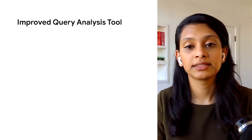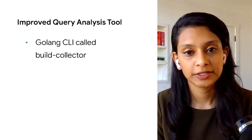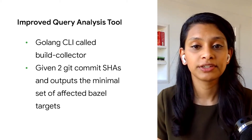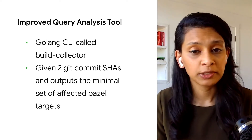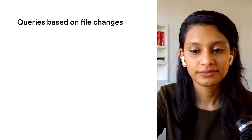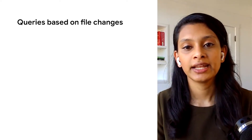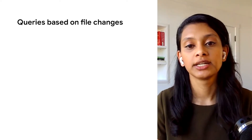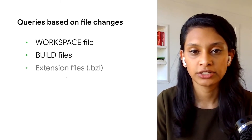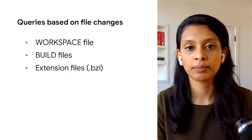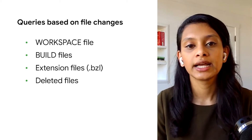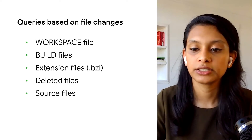The first thing we did was replace the Python script with a Golang CLI called build collector. Build collector takes in two git commit SHAs and outputs the minimal set of affected Bazel targets by running Bazel queries. It's much simpler, not repo or project specific, and — best of all — it's tested so we can make changes without worrying about regressions. Build collector has an understanding of what types of files have changed, which boils down into five change types: workspace file changed, build file changed, extension file changed, deleted files, and the most common — a source file changed.